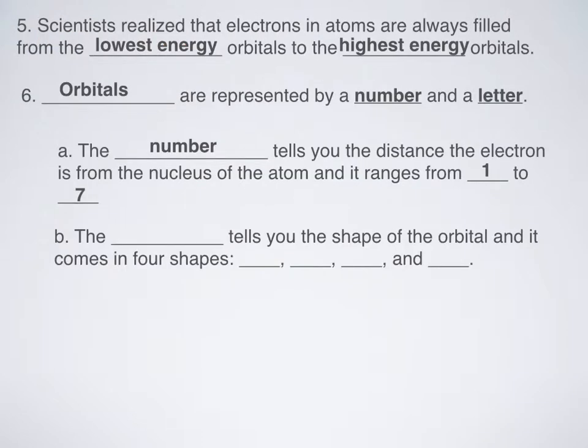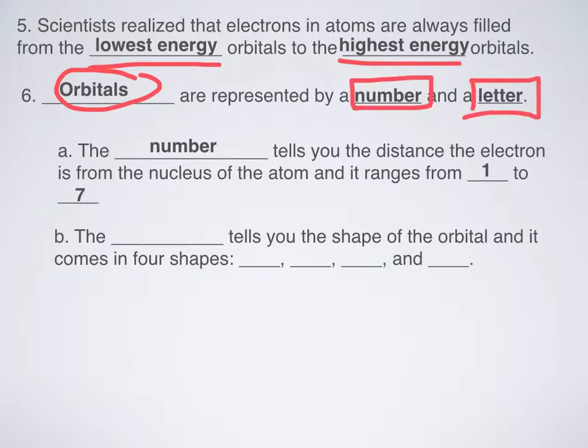Now, something that scientists realized were that atoms are always filled from the lowest energy to the highest energy orbitals. So everybody starts at the ground floor and then kind of works their way up if they can or if they have to, but they don't necessarily have to all the time, as we'll find out. And so what are orbitals represented by in our orbital diagram world? They're represented by two different things, a number and a letter. Now, the number tells you the distance the electron is from the nucleus in the atom, and it ranges from 1 to 7.